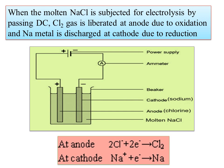We are going to pass direct current. Then, chlorine gas will be liberated at the anode due to oxidation, and sodium metal is discharged at the cathode due to reduction. It will be used in a container with two rods.